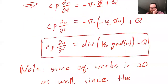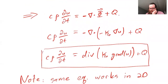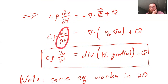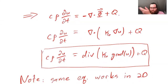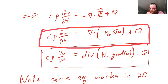What we ended with in the last video was this expression for the heat equation. We can modify this a little bit: the change in temperature in time is going to be proportional to the divergence of the gradient plus whatever source term we have for our system. So this is our PDE.